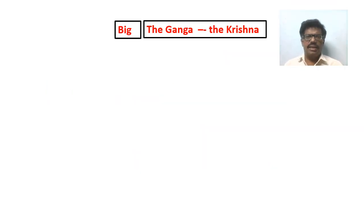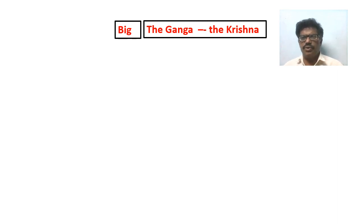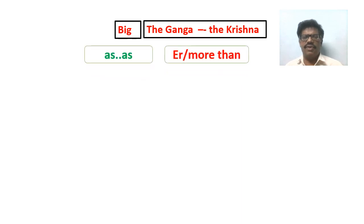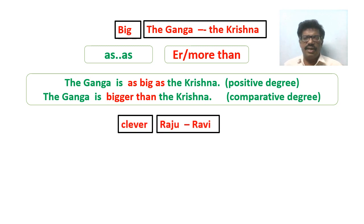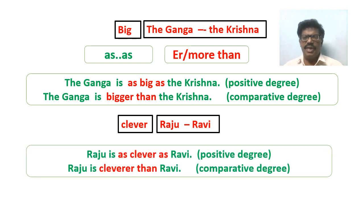Here is one more example. The adjective 'big' is taken to compare two units: the Ganga and the Krishna. As we compare only two units, we can write only two types of sentences — positive degree and comparative degree. The expressions we use are 'as...as' for positive degree and 'more than' for comparative degree. 'The Ganga is as big as the Krishna' — positive degree. 'The Ganga is bigger than the Krishna' — comparative degree. Similarly, taking the adjective 'clever' to compare Raju and Ravi: 'Raju is as clever as Ravi' — positive degree.